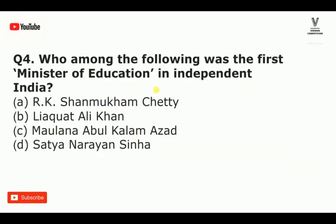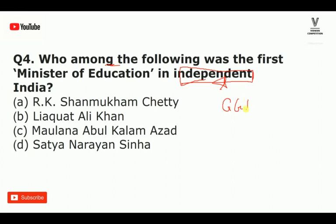The next question: who among the following was the first minister of education in independent India? This is most important. The last governor general of India when under British rule was Lord Mountbatten. But after independence, if we ask the last governor general of independent India, it was Rajagopalachari.